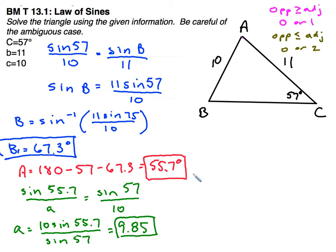Doing a quick check, if B is 67.3, that is the biggest angle, which is opposite the biggest side, so that works. A is the smallest angle at 55.7, which is opposite the smallest side, 9.85, which also works.